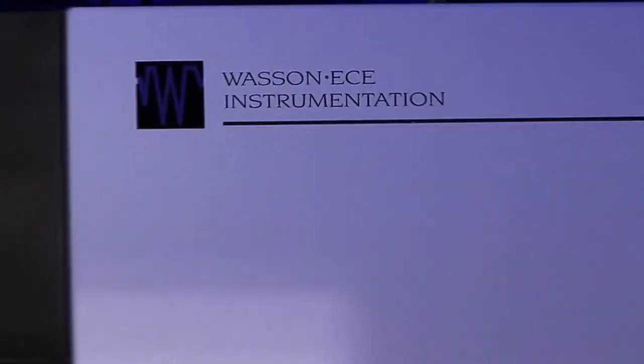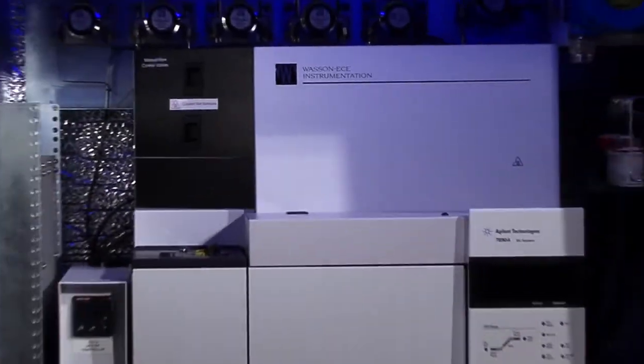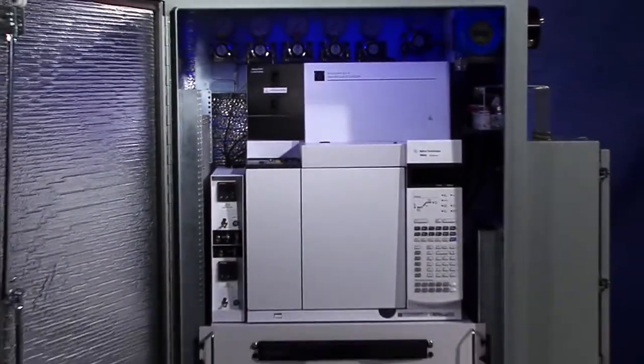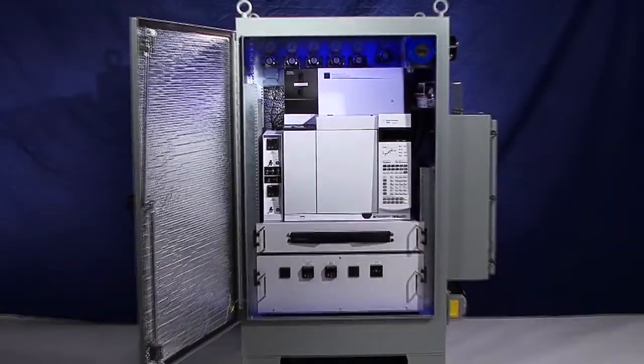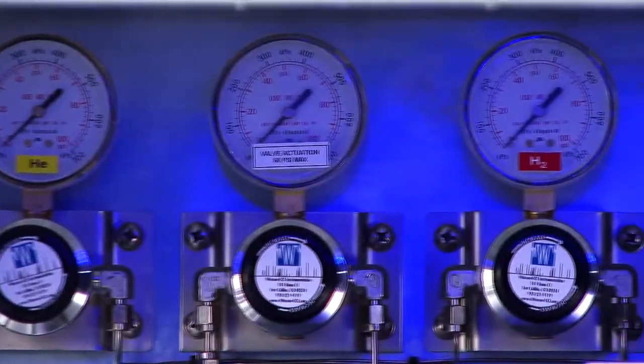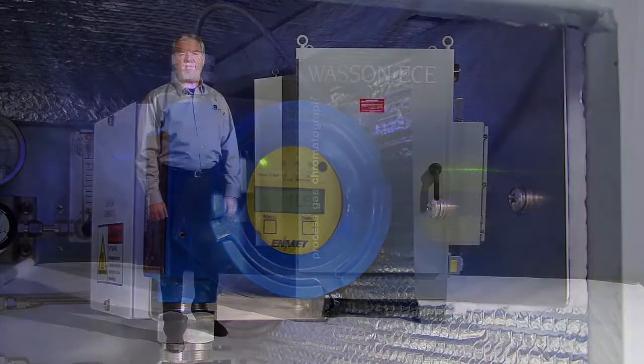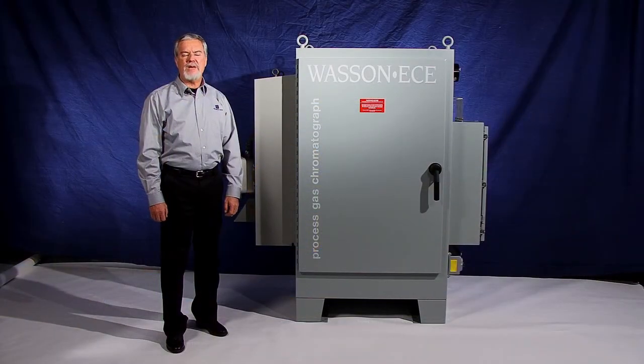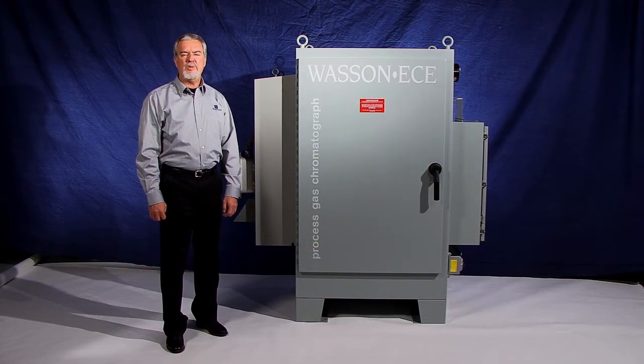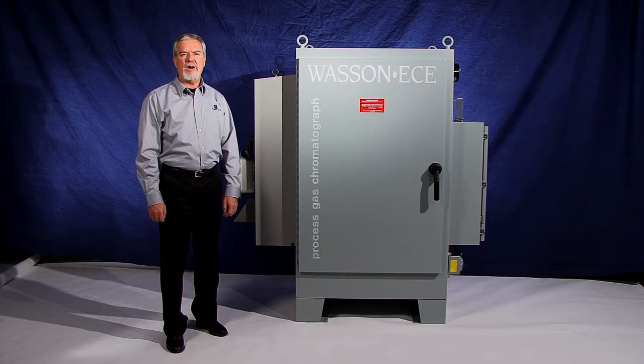As a process gas chromatograph, it is ruggedized and fully automated for deployment in chemical plants, refineries, and environmental monitoring stations. It is purged, pressurized, heated and air-conditioned, and meets NFPA 496, Class 1, Division 2, Groups B, C, and D hazardous area requirements.